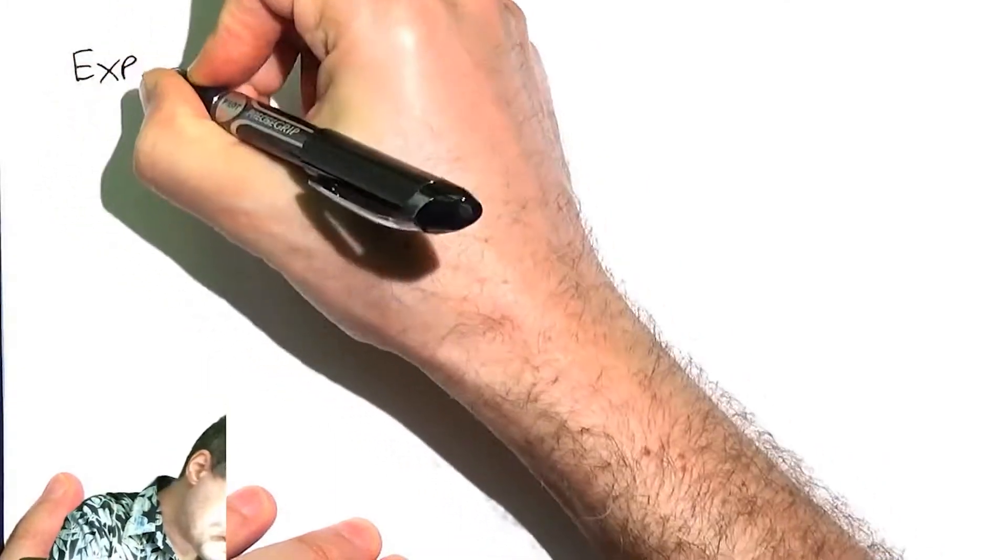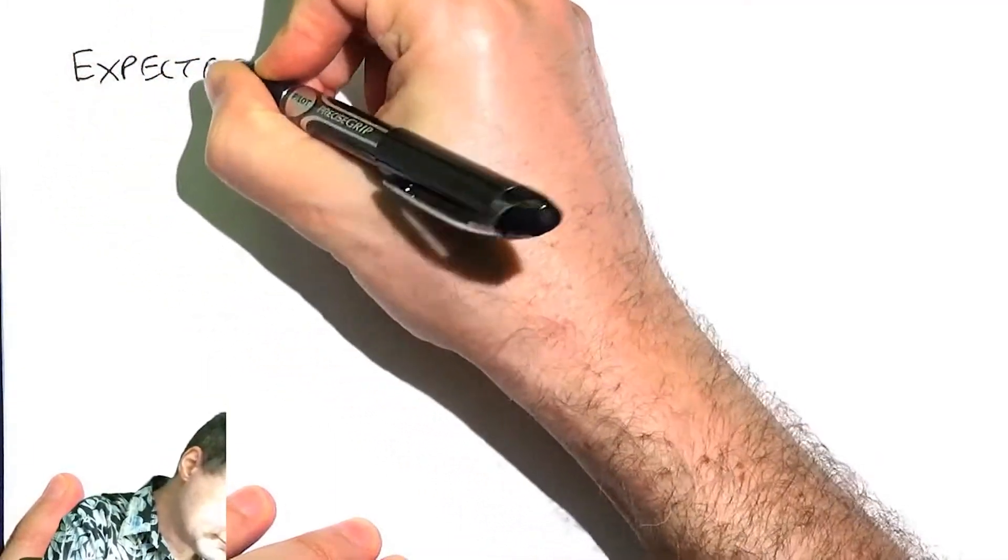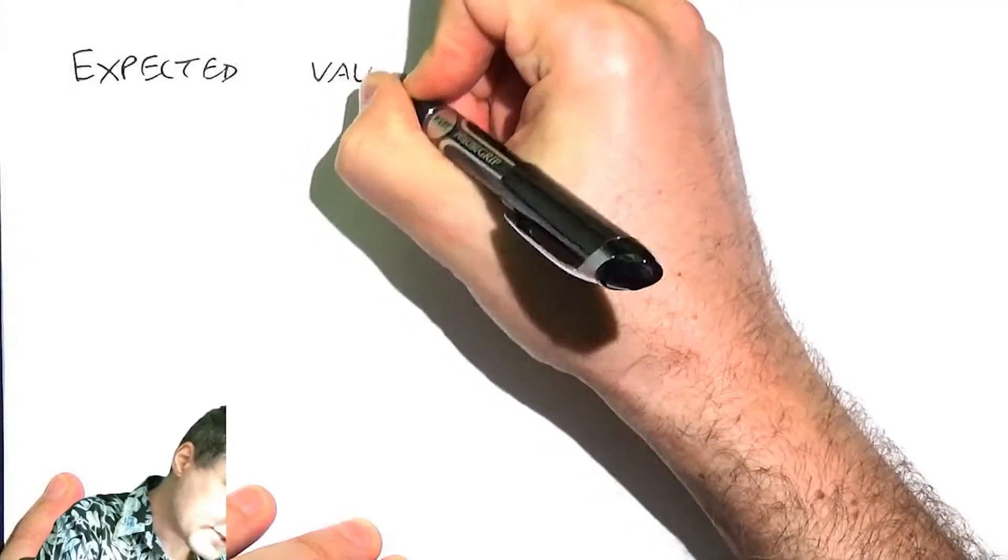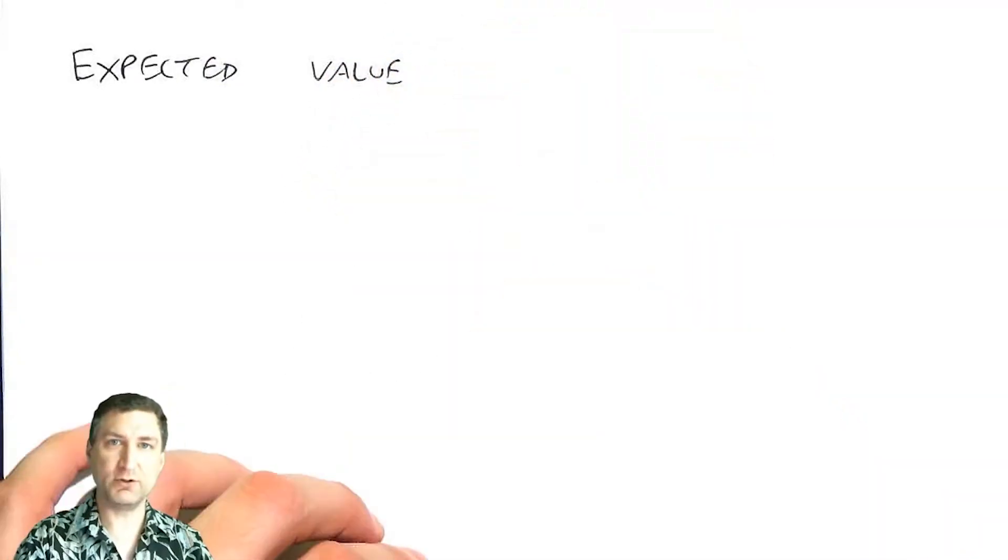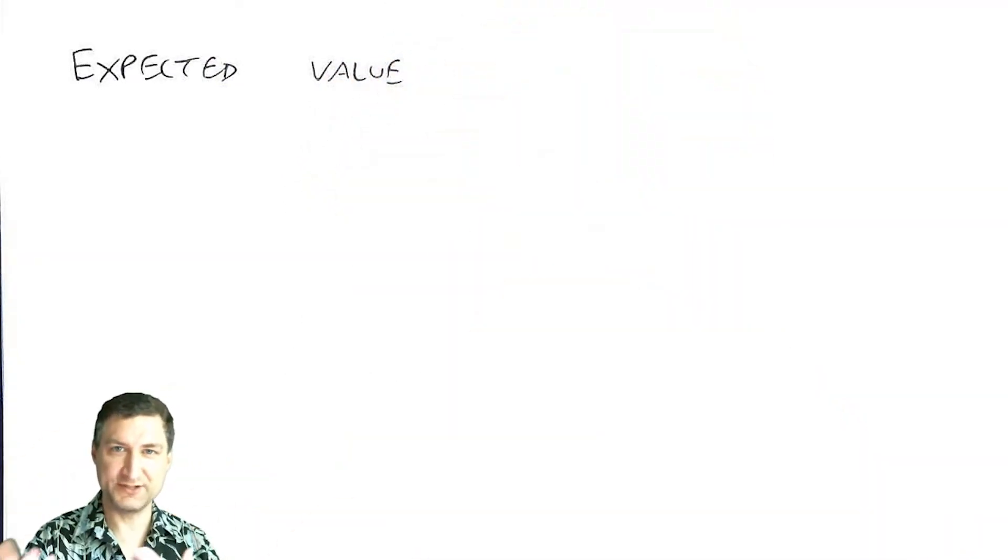Okay, so we talked about the expected value last time, and what I want to talk about now is the expected value of a function of the random variable. So this comes up a lot because we're not necessarily always looking at exactly the random variable. We're doing something to the random variable to get some other number.